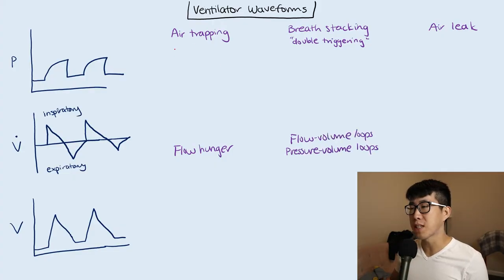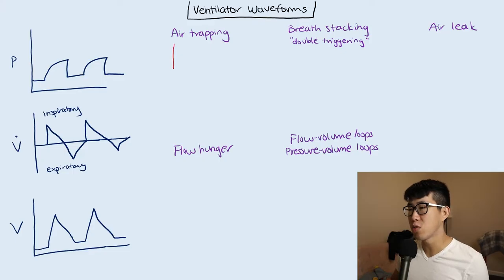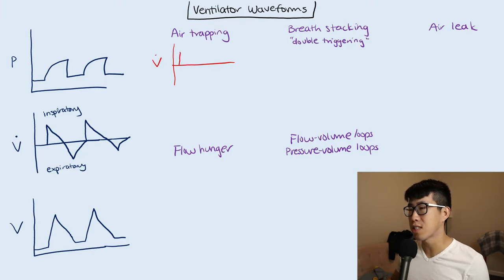For air trapping, this is going to be a common one that you're going to see. You really want to be looking at the flow curve. What you're going to see here is an inspiration, and then you're going to go into the expiration limb, and then it starts to go back to baseline.